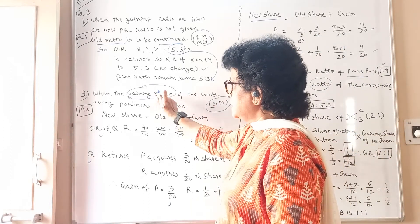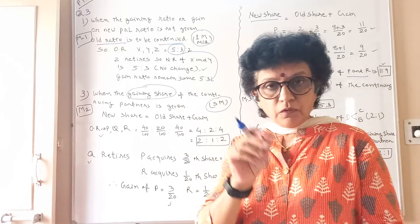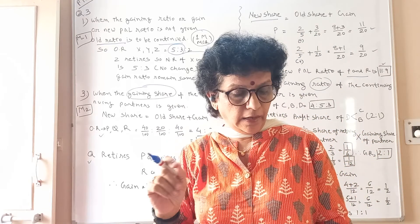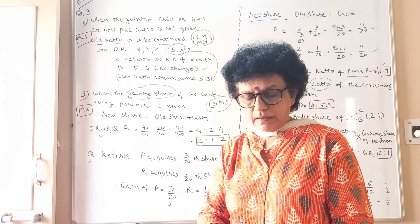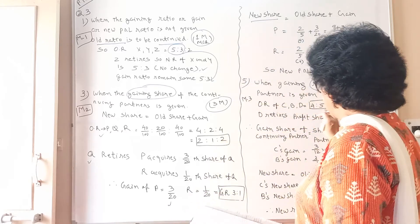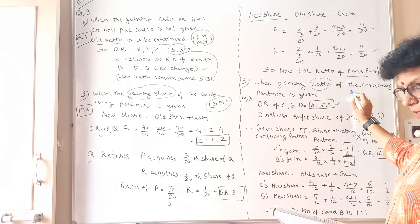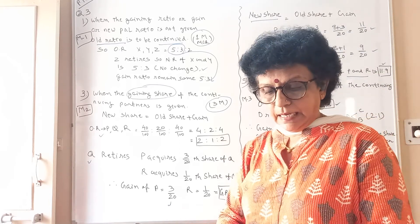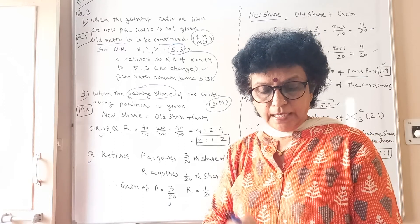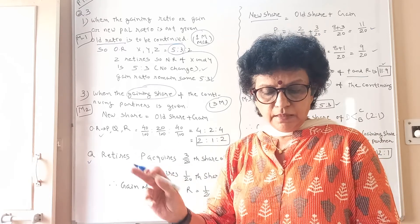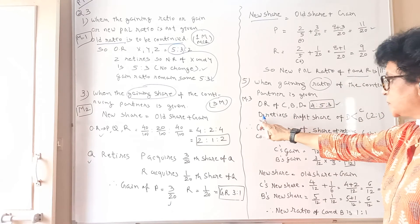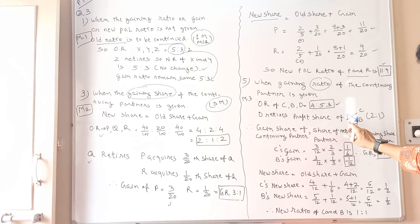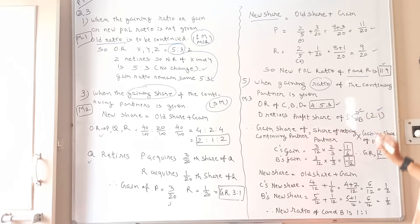The word makes the difference and accordingly you have to understand. See question number 5: C, B and D are partners sharing profit and loss in the ratio of 4:5:3 — the old ratio. D retires and his share is taken up by C and B in the ratio of 2:1. So the ratio 2:1 is given. D retires and the profit share of D is acquired by C and B in the proportion 2:1.